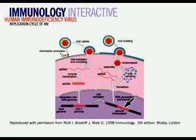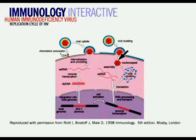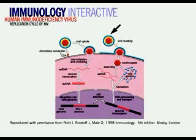If the provirus is activated, the proviral DNA is transcribed and genes for viral proteins are translated. The core and matrix proteins now assemble around the viral RNA to produce new virions, while envelope proteins are inserted into the host cell membrane. New virus is then produced by budding from the cell membrane.